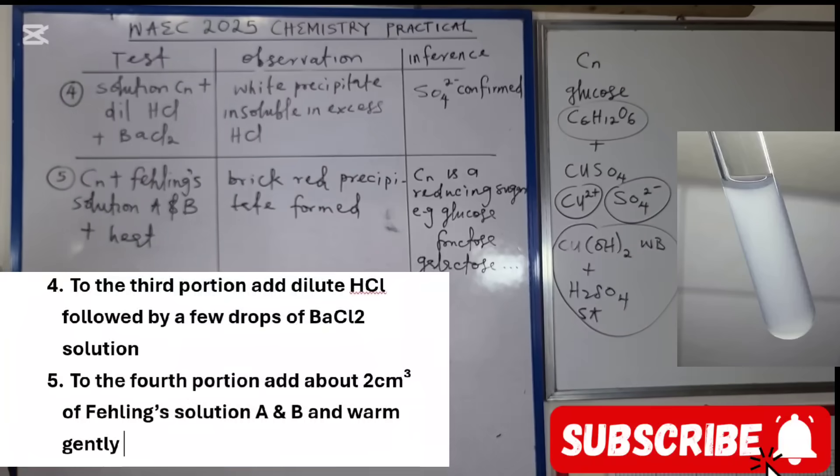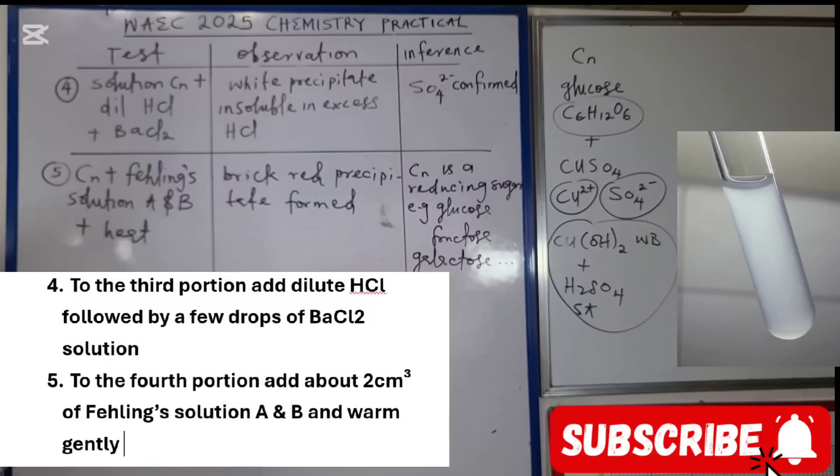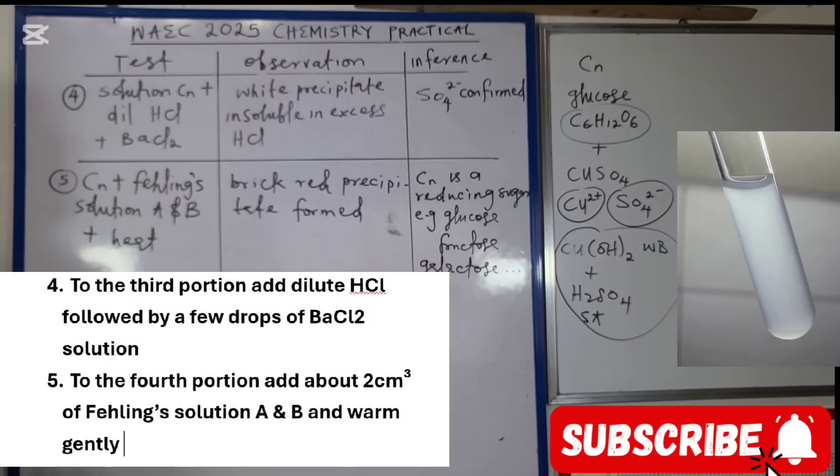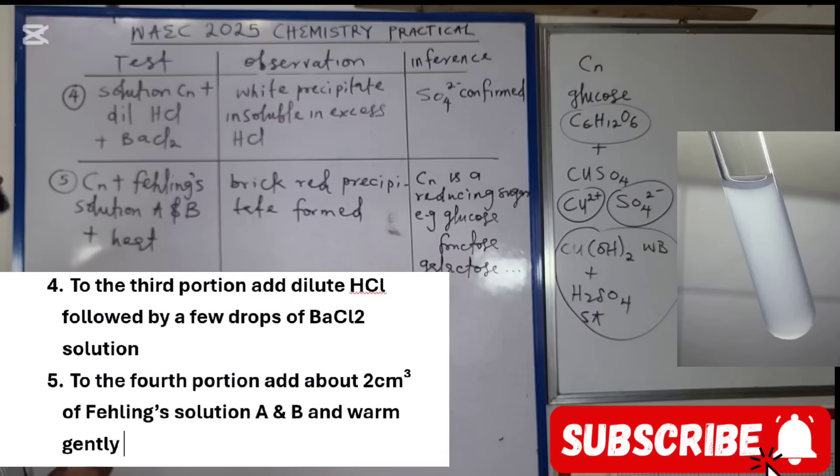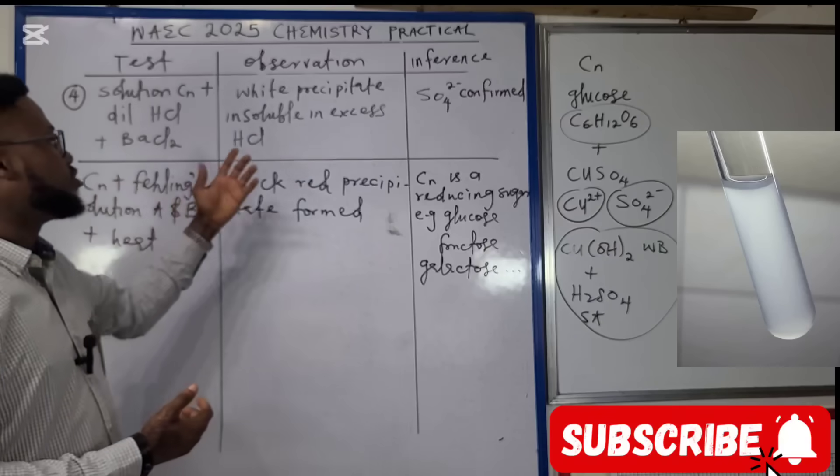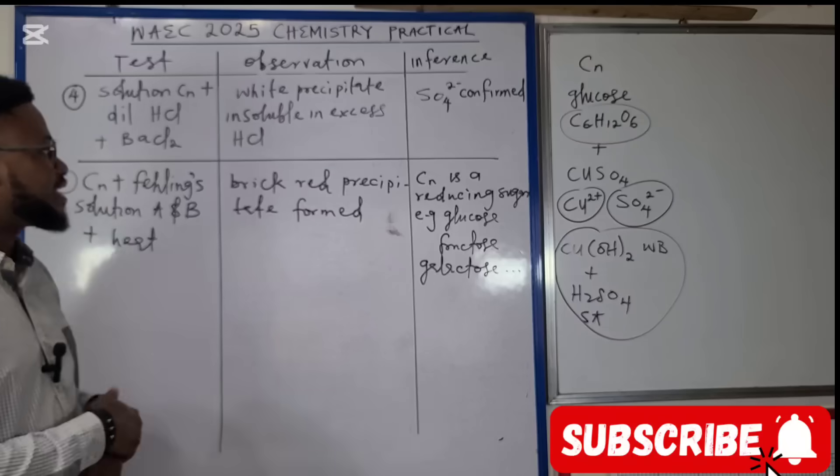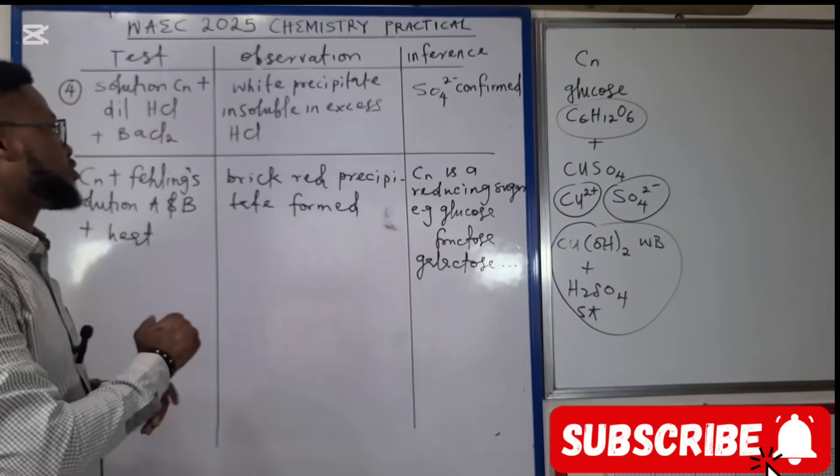Solution CN plus dilute HCl plus barium chloride, that's going to give us a white precipitate. This precipitate is not going to dissolve even when we add excess dilute HCl - insoluble in excess HCl. In that case, SO₄²⁻ is confirmed, that sulfate ion is confirmed.